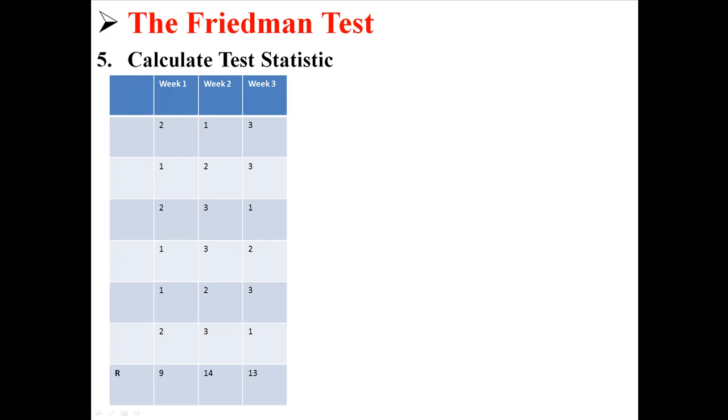Now we need to find the rank for each of the columns. So the total rank for week 1 is 9, the total rank for week 2 is 14, and the total rank for week 3 is 13. And we're going to use these 3 r's in our chi-square equation.